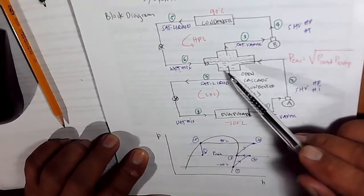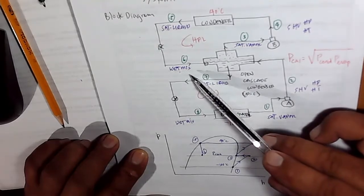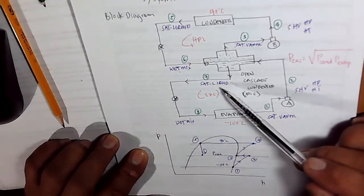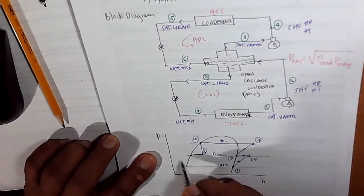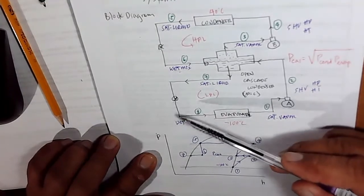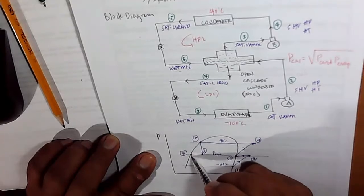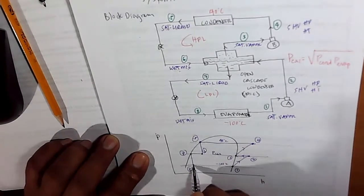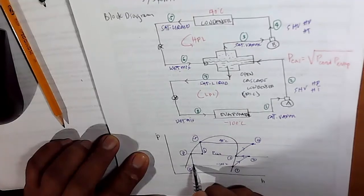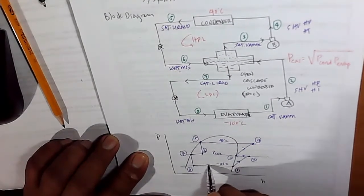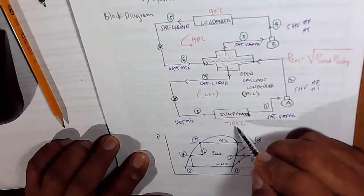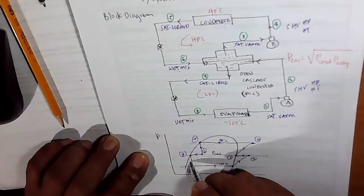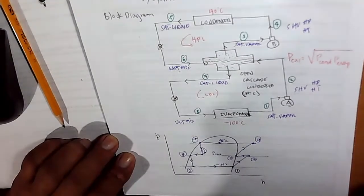It will go to your expansion device at constant entropy — a line going straight downward — until it crosses the pressure corresponding to your cascade condenser. This is your point 6. At point 7, as all liquids settle down, the wet mixture is converted into pure saturated liquid. Then for the next expansion device, across constant entropy once again, going straight down until you cross the pressure corresponding to negative 100 degrees Celsius — this is your point 8. Going from point 8 to point 1, the wet mixture changes to saturated vapor by heat absorption from the fluid in your evaporator. That is your pH diagram of your cascade refrigeration system.